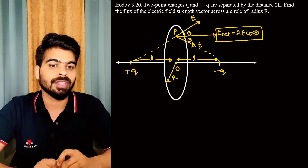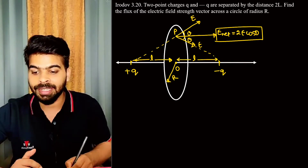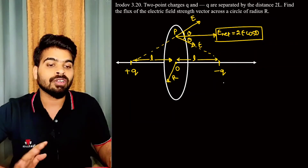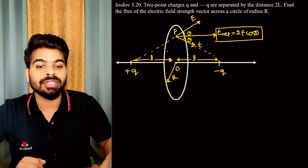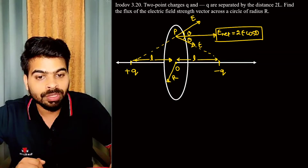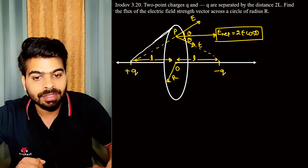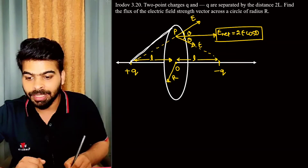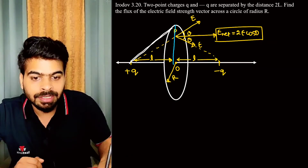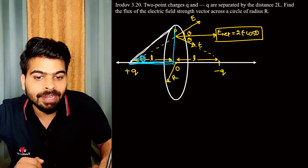To find the flux, we will use the solid angle concept. We need to find the plain angle here. The topmost point gives us a plane angle theta to calculate.